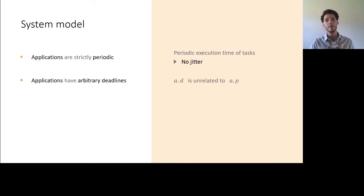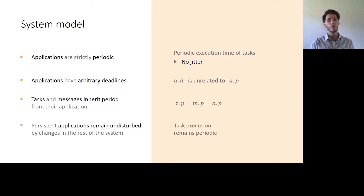Furthermore, the applications have arbitrary deadlines. That means the deadline is completely unconstrained to the application period. The tasks and messages inherit their period from their applications. And finally, TTW supports what we call persistent applications, which are applications that should remain completely undisturbed by any other changing happening in the network. That would be, for example, the start or the termination of some other applications.